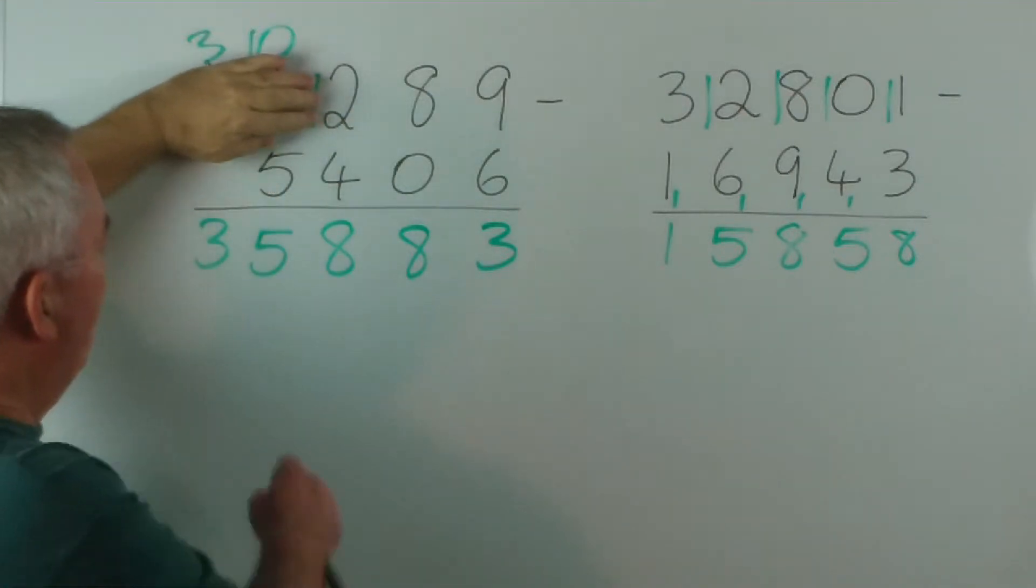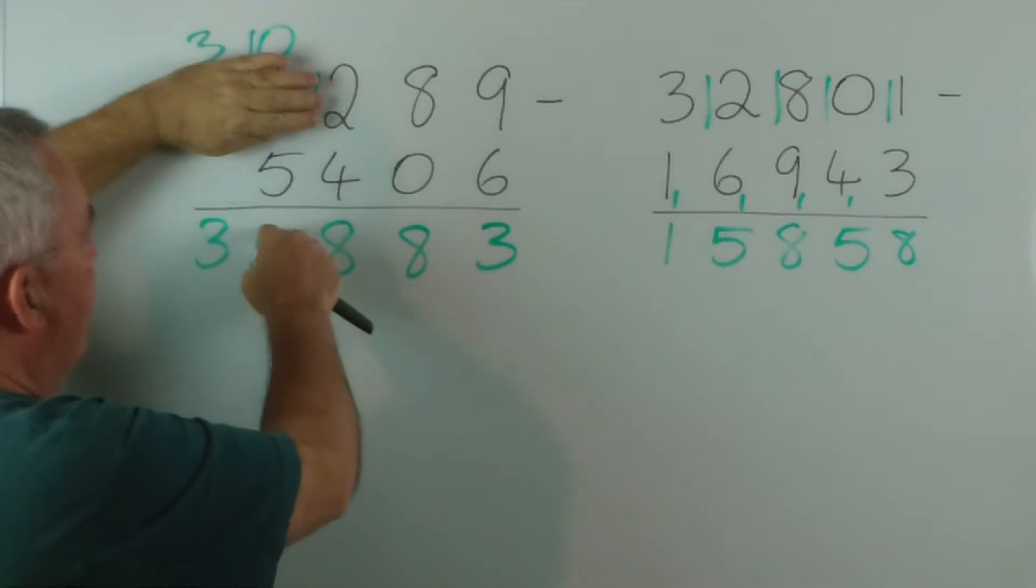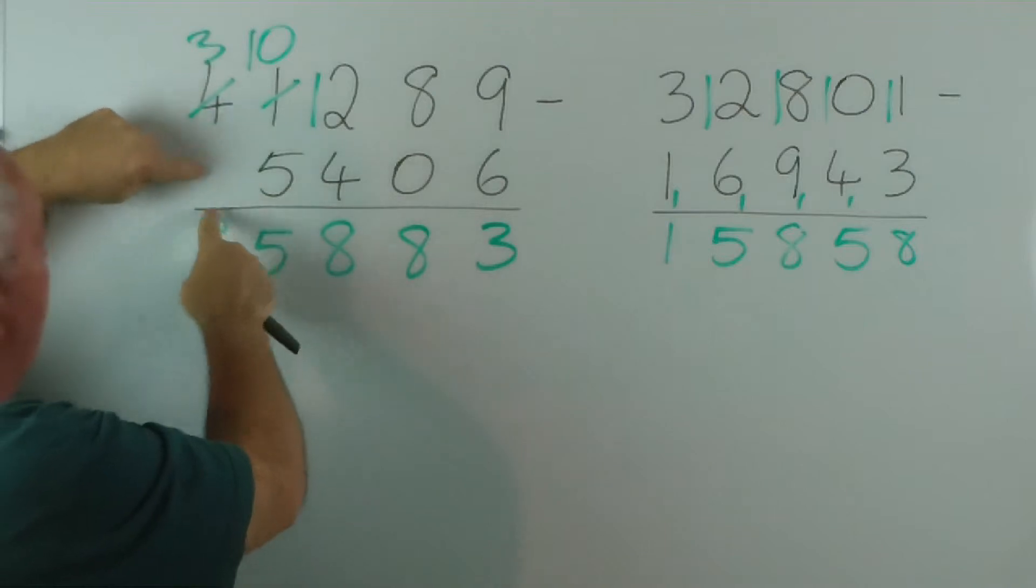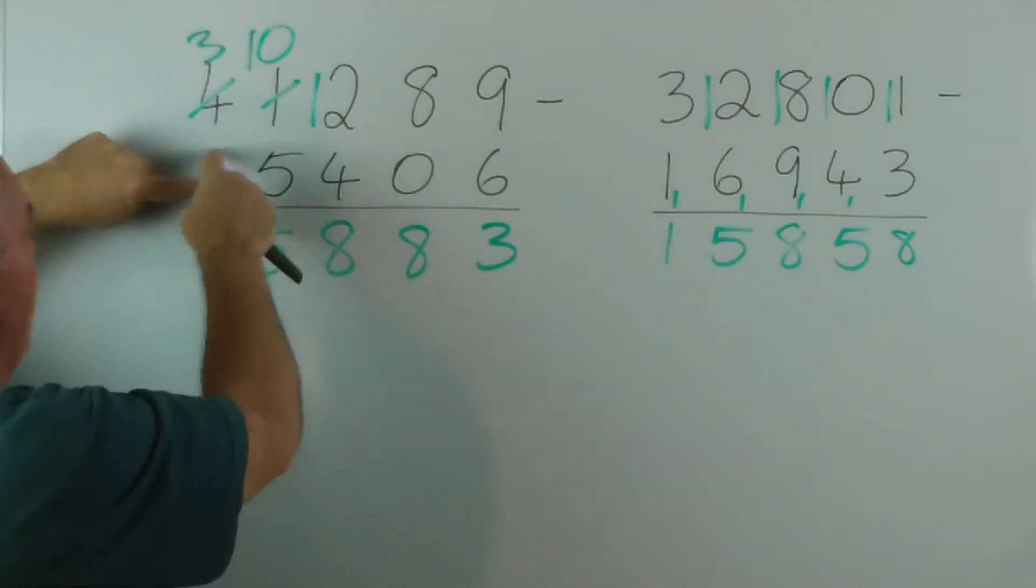Now, there's a 2... carry the 1. 5 and 5 are 10 and 1 is 11... there's our 1. We've got to look at the black numbers... carry the 1... and 3 plus 1 is 4.